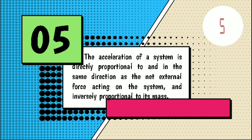Five: the acceleration of a system is directly proportional to, and in the same direction as, the net external force acting on the system, and inversely proportional to its mass. Type your answer. The correct answer is two, law of acceleration.